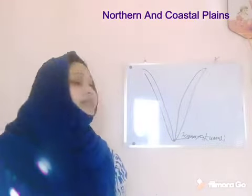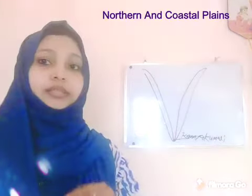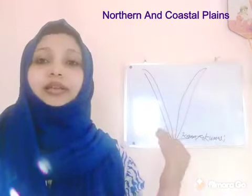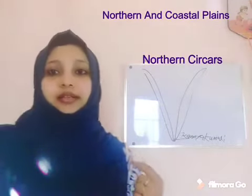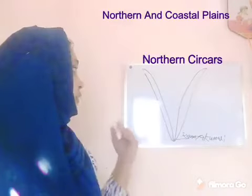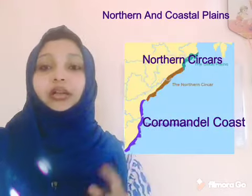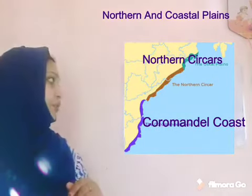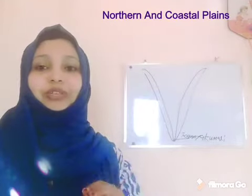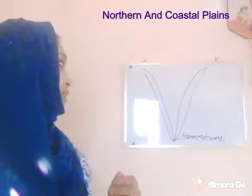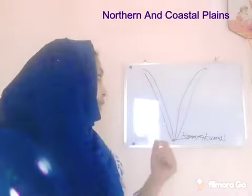The eastern coastal plain is further divided into two parts. The northern part is known as the Northern Sirkars, and the southern side is known as the Coromandel Coast. Just remember the names of these sections. We will study more about this coastal plain in the coming classes.